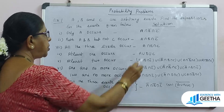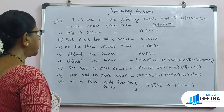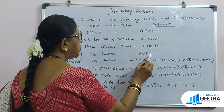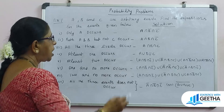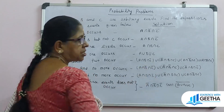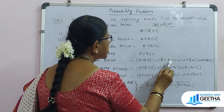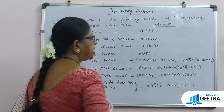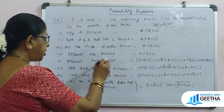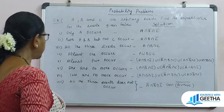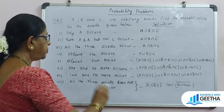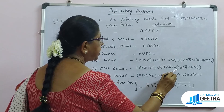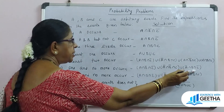At least one of A, B, or C occurs: A union B union C. At least two occur: (A intersection B intersection C complement) union (A complement intersection B intersection C) union (A intersection B complement intersection C) union (A intersection B intersection C).